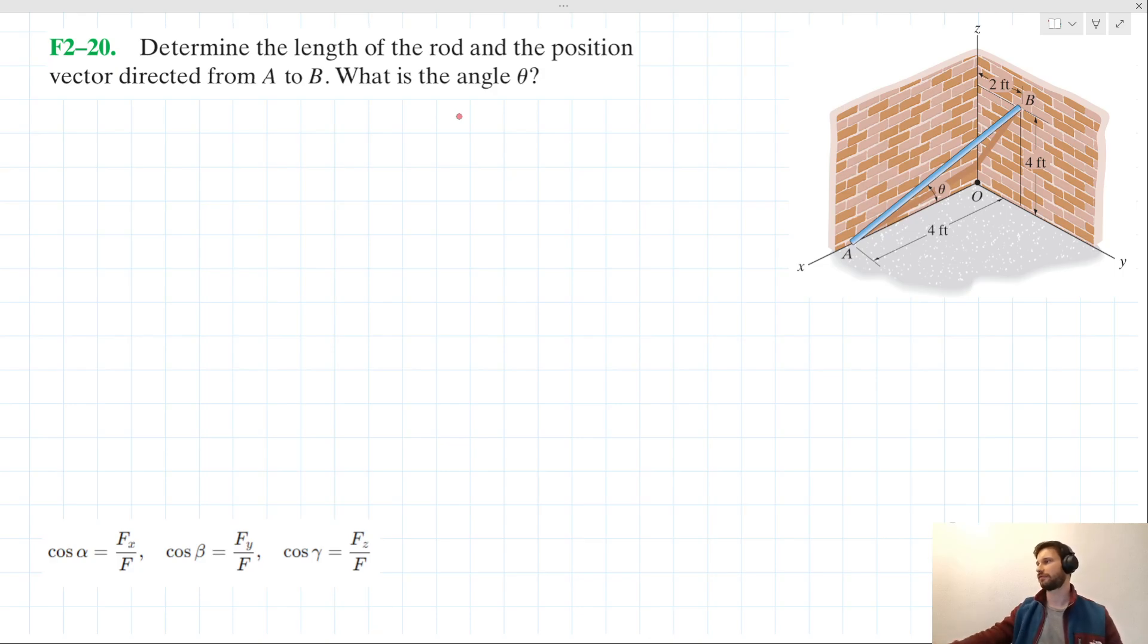So we have this problem from chapter 2 of the textbook that's saying determine the length of the rod and the position vector directed from A to B. What is the angle theta? So there's a few things to unpack from this question here.